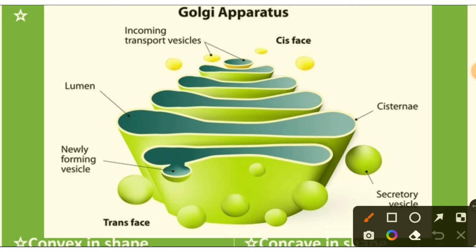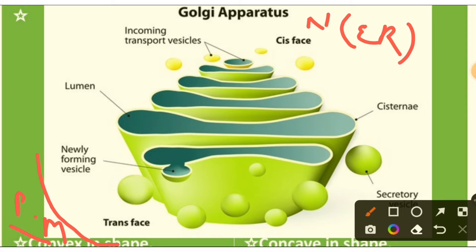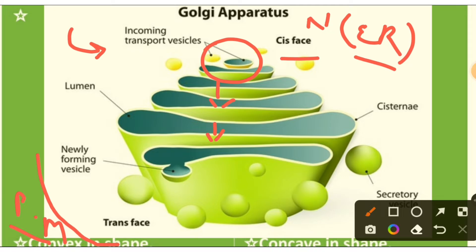You can see in the diagram that the cis phase is present towards the nucleus, or we can say towards the endoplasmic reticulum, and it receives incoming transport vesicles which contain unmodified proteins and lipids. These vesicles are then modified within the Golgi complex. The Golgi complex contains cisternae which are parallely arranged to each other; a single cisternae sac is called a Golgi body.